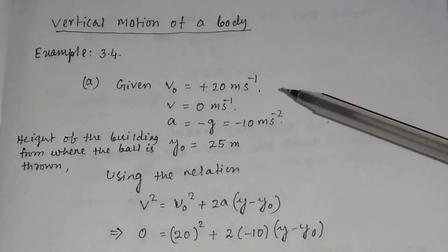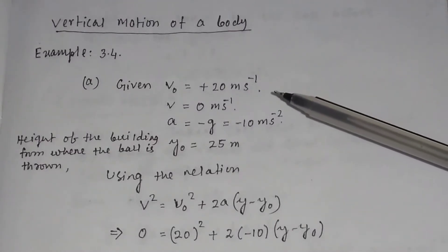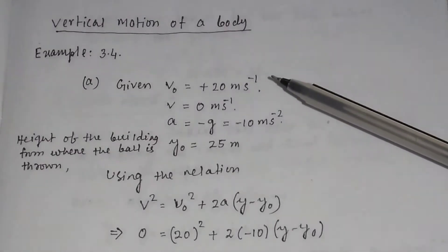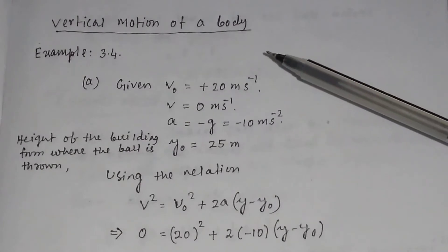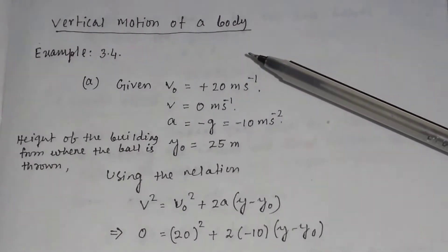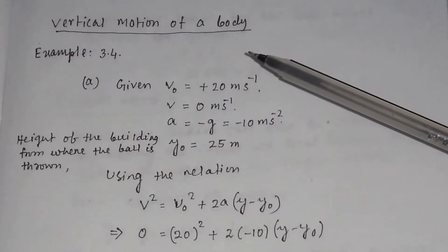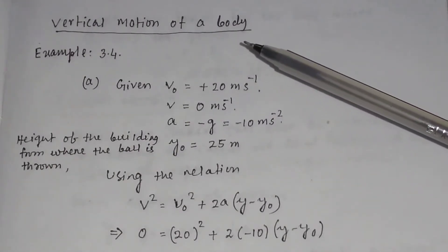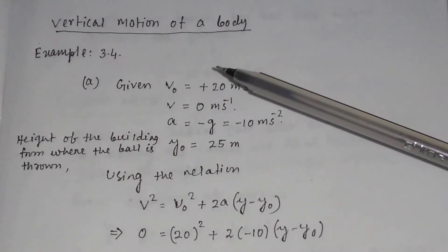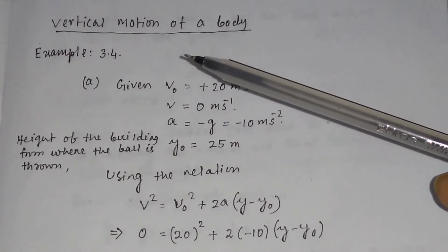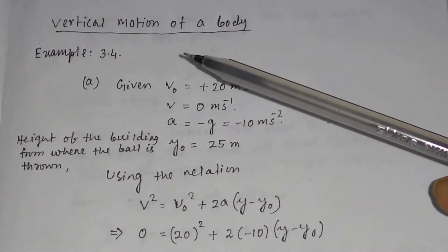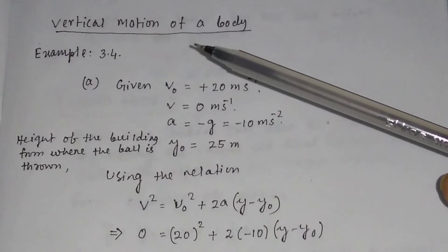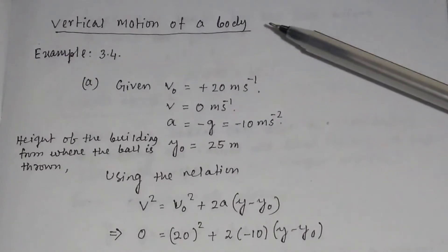In this video we will discuss about the application of the equation of motion. Here we will discuss one application, that is vertical motion of a body. Let us discuss example 3.4 for the vertical motion of a body.